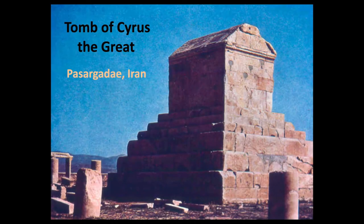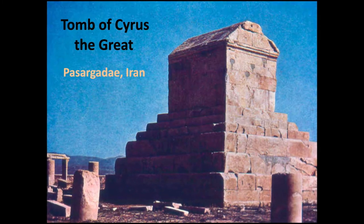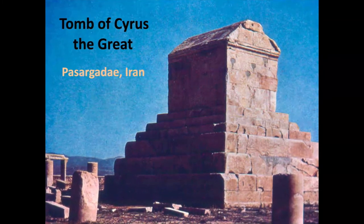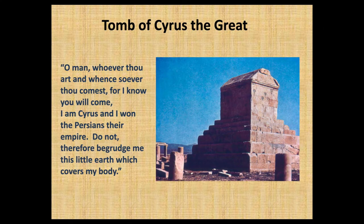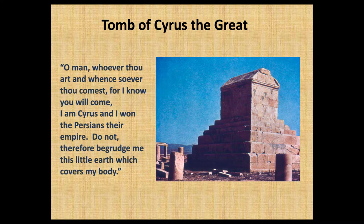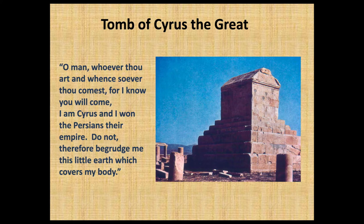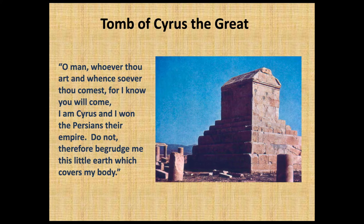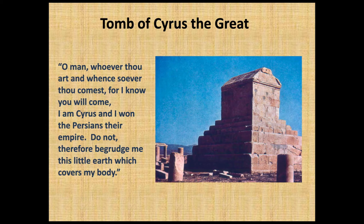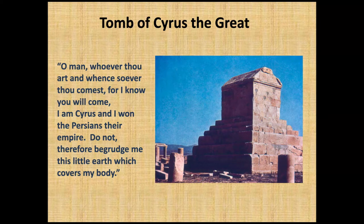Cyrus the Great has his tomb in Pasargadae, Iran. Cyrus is the one who made it his policy to return captives to their homeland. An inscription from the tomb of Cyrus the Great reads: 'O man, whoever thou art and whensoever thou comest — for I know you will come — I am Cyrus, and I won the Persians their empire. Do not, therefore, begrudge me this little earth which covers my body.'